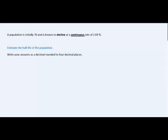In this problem, we have a population that's initially 70 and is declining at a continuous rate of 2.69%. We are to estimate the half-life of this population and give a four decimal place estimate.